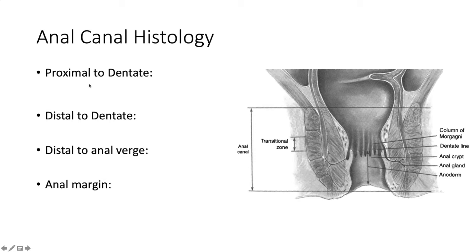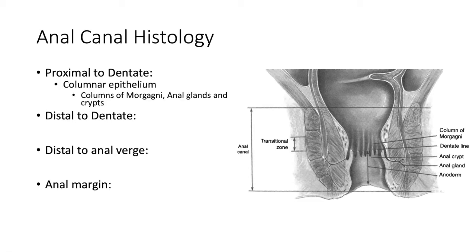Does anyone know the histology of the anal canal proximal to the dentate line? Just columnar epithelium with those crypts and anal glands. Then the dentate line or that whole space is kind of a transition zone — honestly analogous to the Z-line at the GE junction and other transition zones anywhere else in the body. Distal to the dentate — is there another way we further subclassify squamous epithelium?